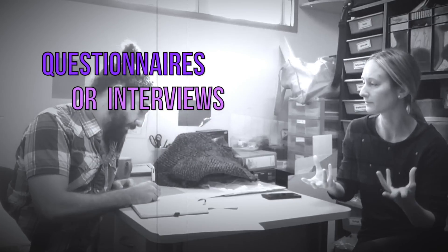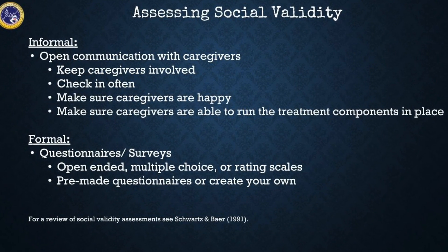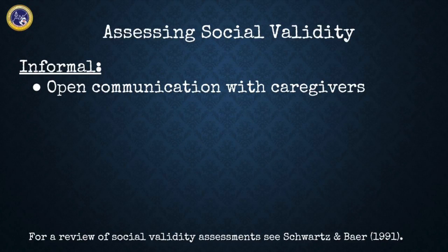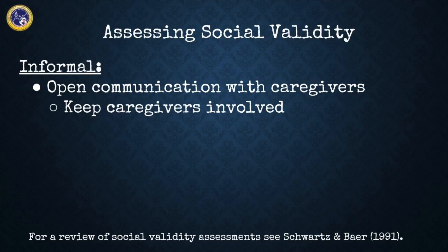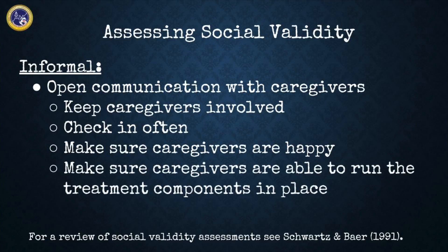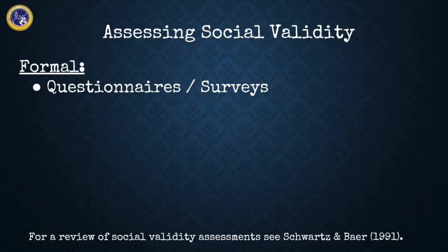A simple way to assess social validity is through questionnaires or interviews. These can be formal or informal. We want to make sure to keep open communications with caregivers, that caregivers are involved, and that we check in with them often to make sure they're happy. We also want to make sure that we're developing plans and treatment components that caregivers are actually able to run.